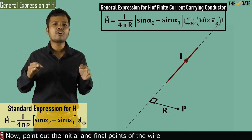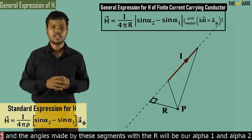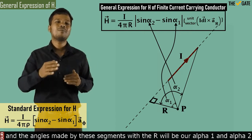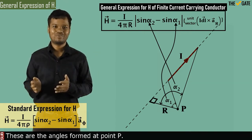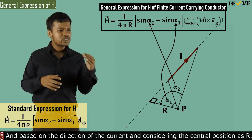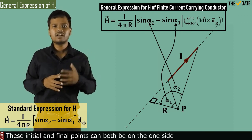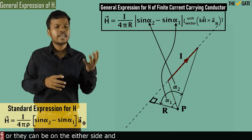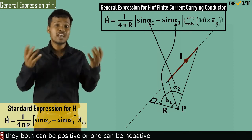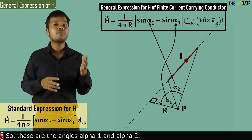Point out the initial and final points of the wire and connect them with the required point P. The angles made by these connecting segments with capital R will be our alpha 1 and alpha 2 — these are the angles found at point P. Based on the direction of current and taking capital R as the central reference, the initial and final points can both be on one side or on either side. Accordingly, alpha 1 and alpha 2 can both be negative, both positive, or one negative and one positive.